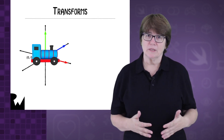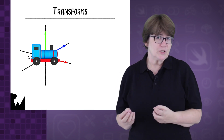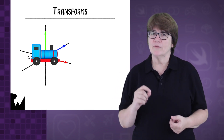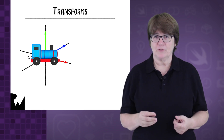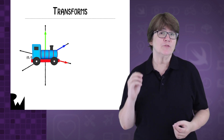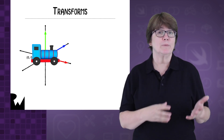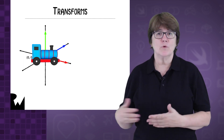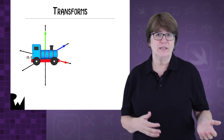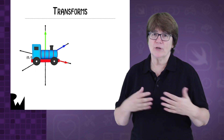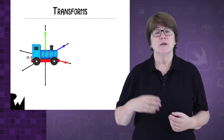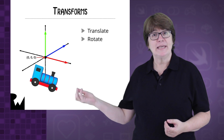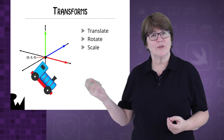Each vertex in a model has a position generally between minus one and one. Models do often have vertex positions outside of this range, but just for now we'll work between minus one and one. Matrices enable us to transform these vertices easily. Mathematically, a transformation is a function that translates or moves, rotates, or scales something.